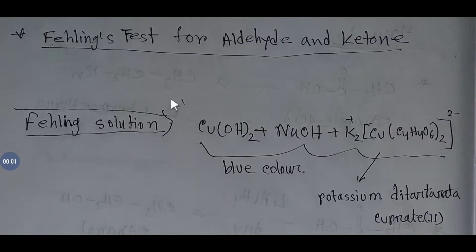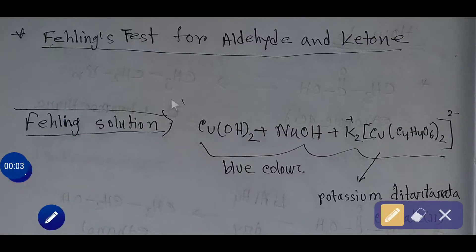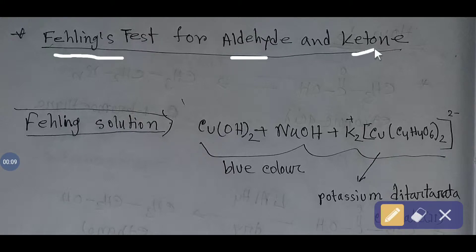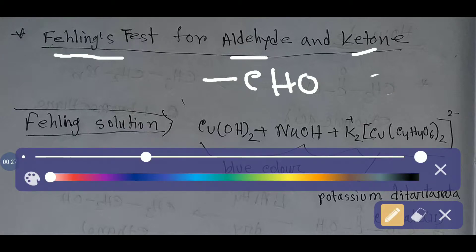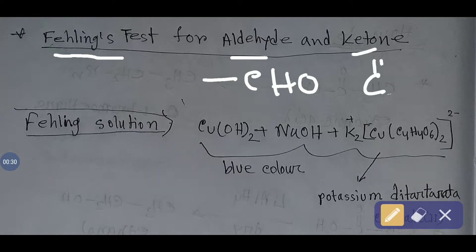Hello everyone. Today we are going to learn the Fehling's test for aldehyde and ketone. The compound which has a CHO group is called aldehyde, and the compound which has a carbonyl group is called ketone. Today we will look at the difference between aldehyde and ketone by Fehling's test.